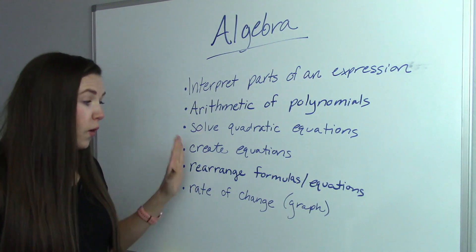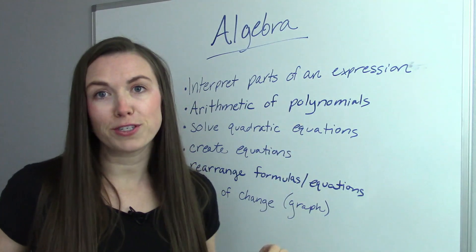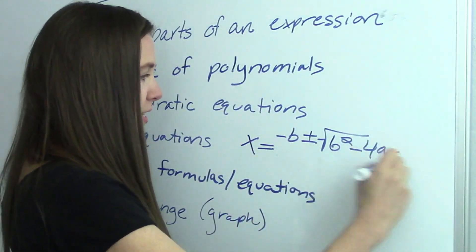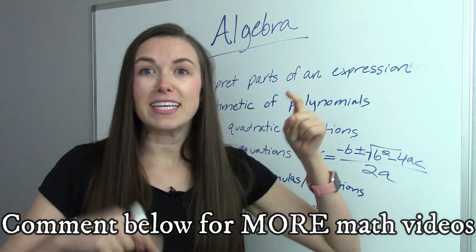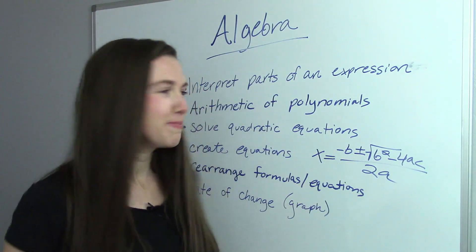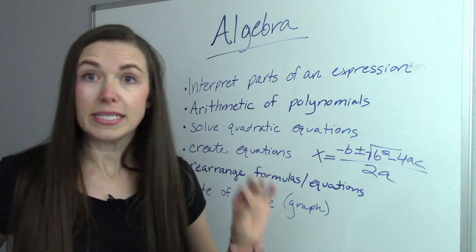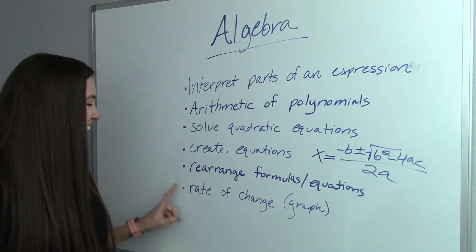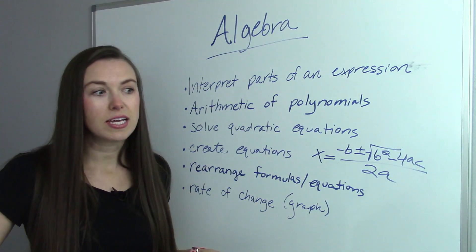You'll also need to solve the quadratic equation. On the HiSET test you have to memorize it, but on the GED and TASC it's provided on the formula sheet. You also need to create equations, rearrange formulas and equations — for instance, A squared plus B squared equals B squared plus A squared — and understand rate of change with graphs: be able to read and understand graphs in relation to algebra.